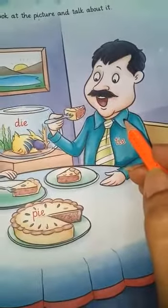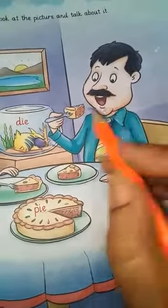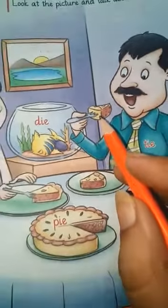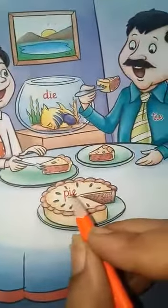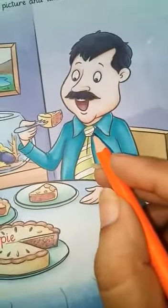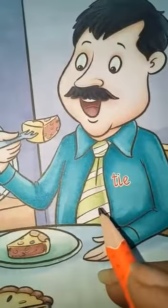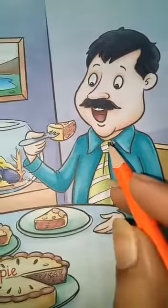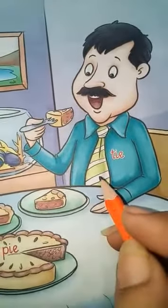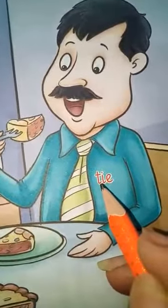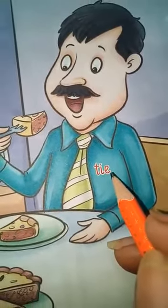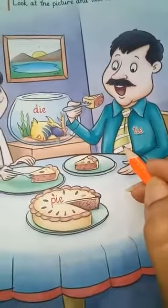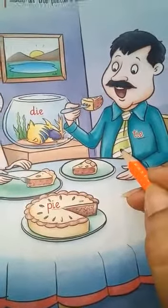Who is he? He is a father. What is he eating? He is eating a pie. And I think he is wearing something. Look at this — what is he wearing? He is wearing a tie. Yes, he is wearing a tie. T-I-E, tie. The word tie has an I ending sound.